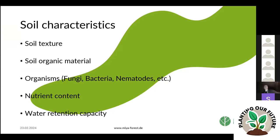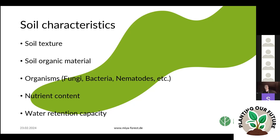More important for us than soil types are the soil characteristics: soil texture, soil organic material, organisms living in the soil — fungi, bacteria, nematodes, and other small animals — nutrient content, and water retention capacity.